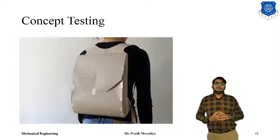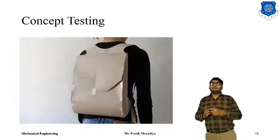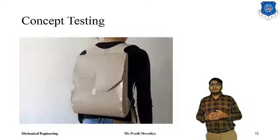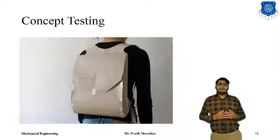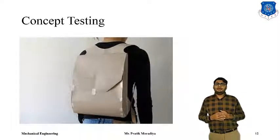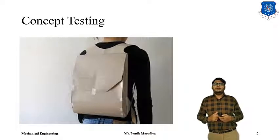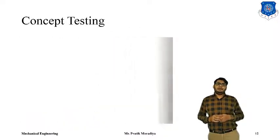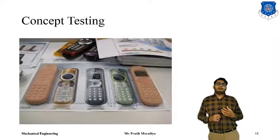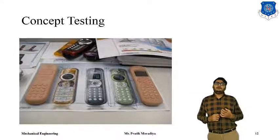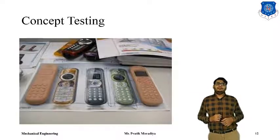A low fidelity prototype shows the product with all the features that are available, but it is not fully functional. The paper prototype shown here is made of paper only — with paper and some sticky tape or sellotape. So this is very easy to build, and it also gives a solid idea of how the product will look and how it will work, but it is not the product in its full functionality. These are called low fidelity prototypes. Then there can also be an actual physical prototype, which will be more costly.